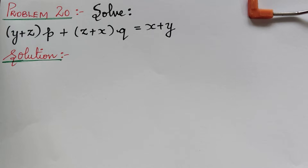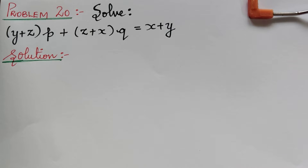Dear students, under the topic Lagrange's linear partial differential equation, here we have problem 20, which is a little different from the previous problems we have solved. In our previous lectures, we solved problems using the method of grouping, and also problems where we used the method of multipliers. In this problem, we are going to apply both methods one after the other — the method of grouping and the method of multipliers.